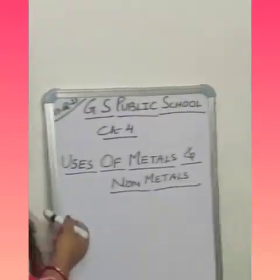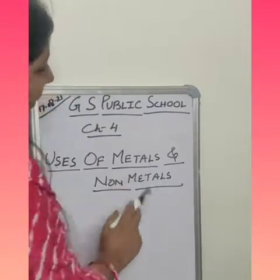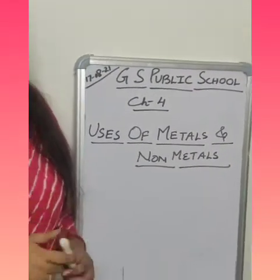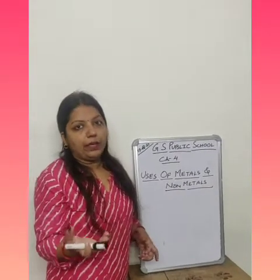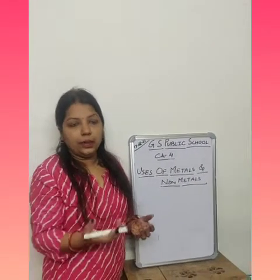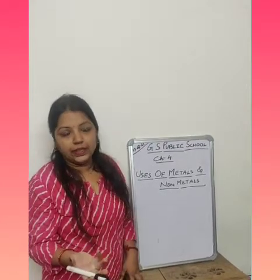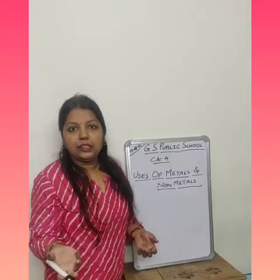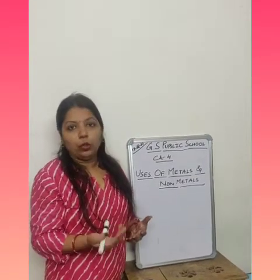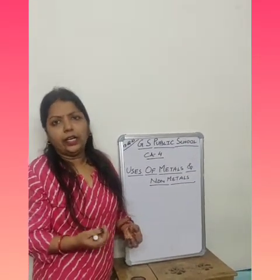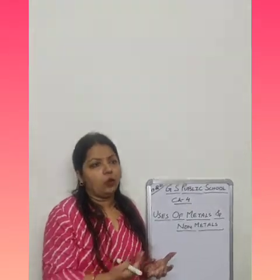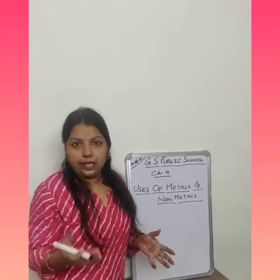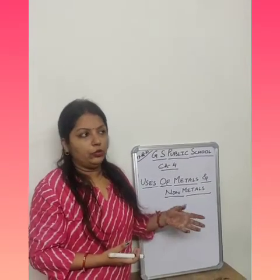Next topic: the last topic is uses of metals and non-metals. What are the uses of metals? You can see utensils made of steel and copper - all metals. In industry, machinery is made of metals. There are many things you can see around you: doors in your house, iron, copper, steel - all metals. There are many uses of metals.